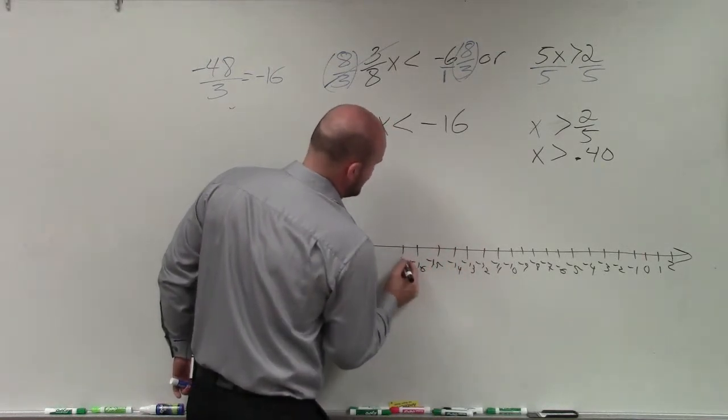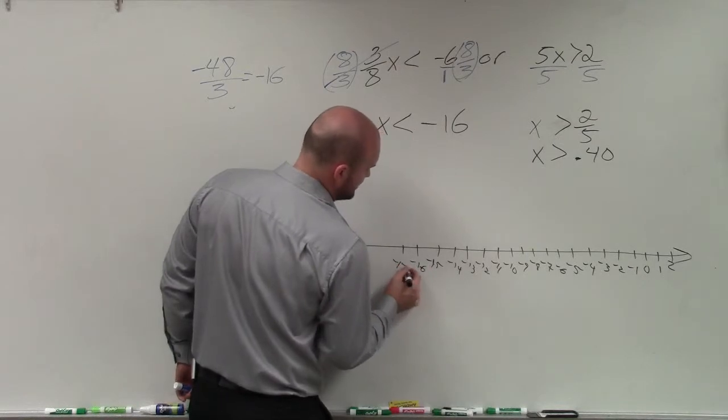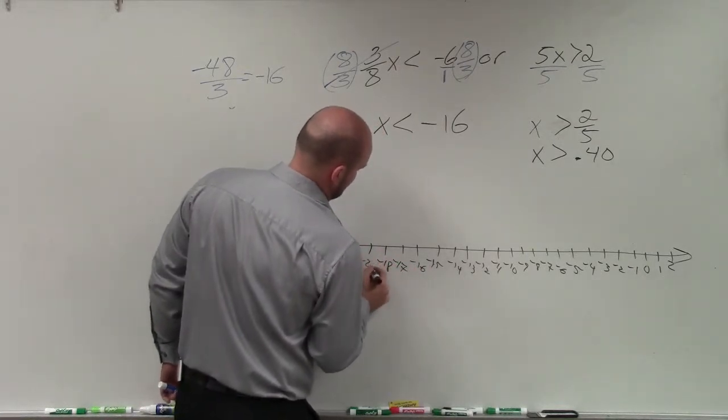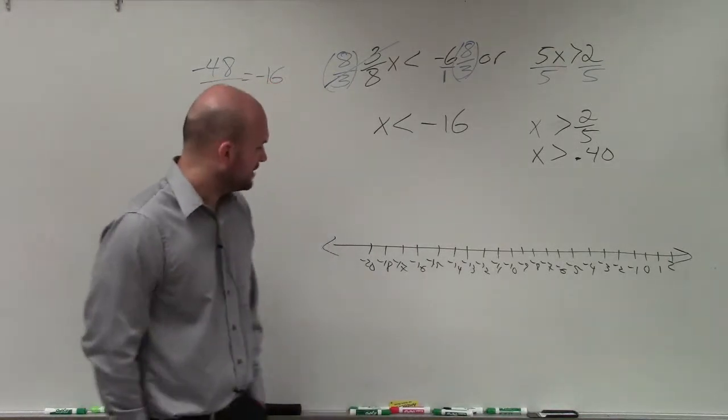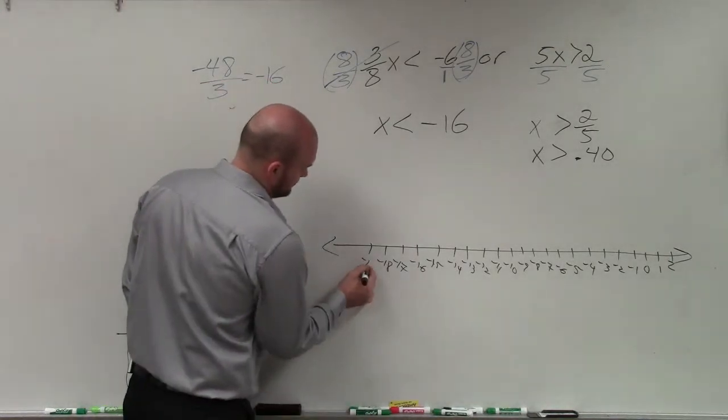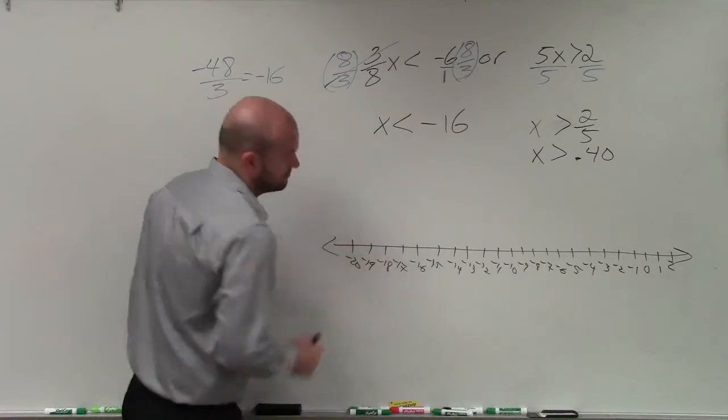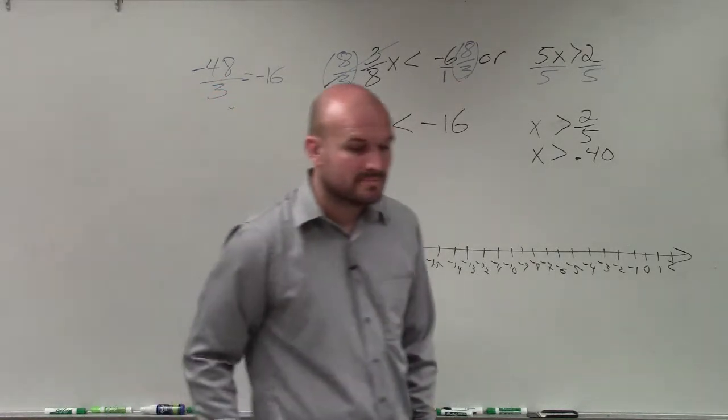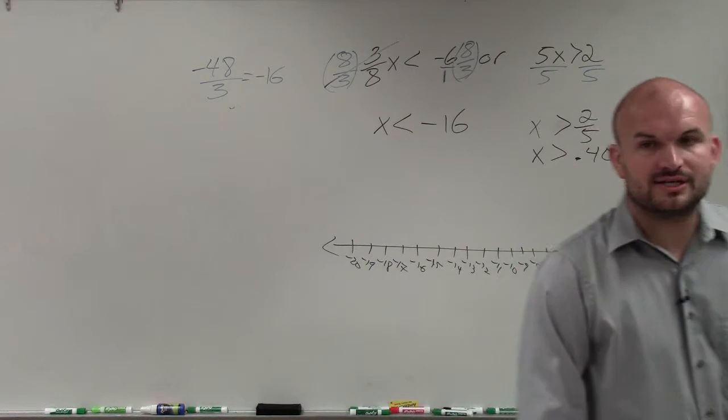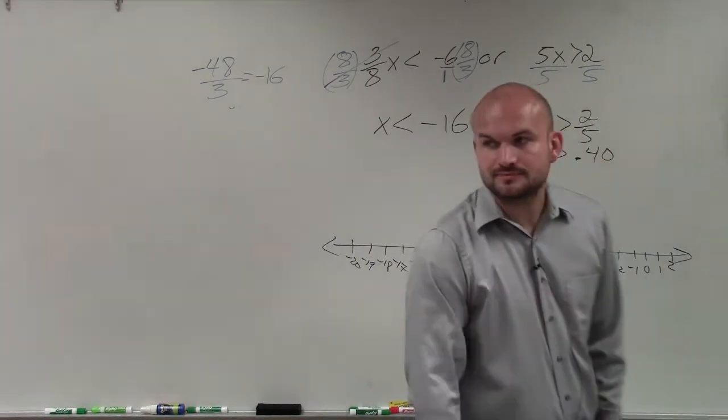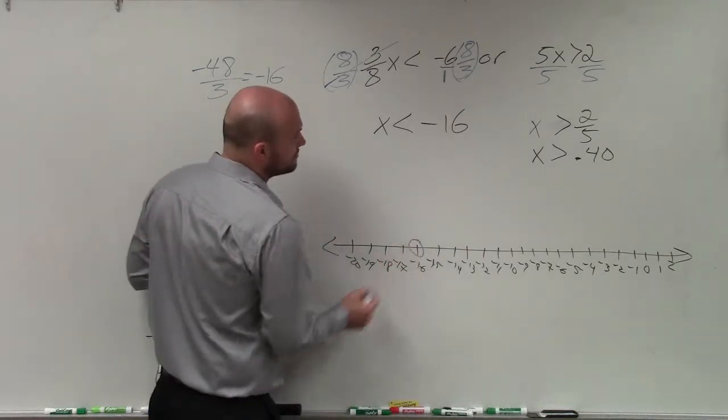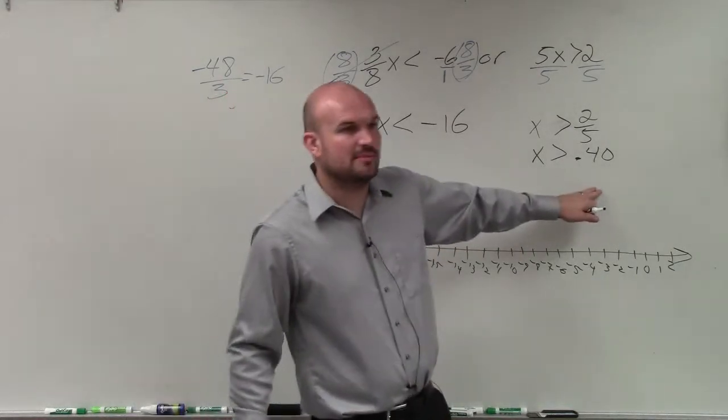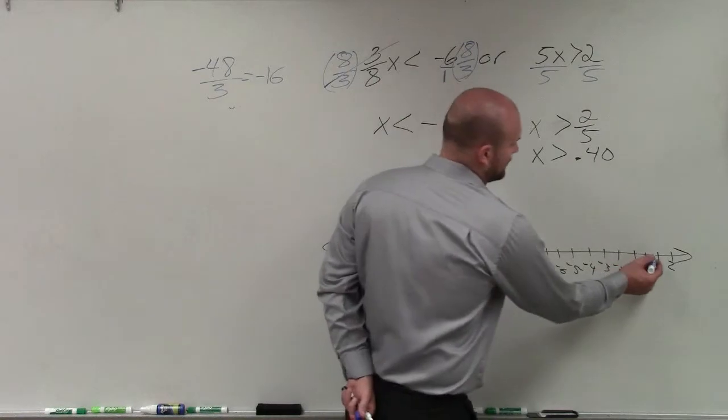You can go by 2s, you can go by 3s, you can go by 4s. That's perfectly fine. So now we need to go ahead and plot both of these points. And when we plot both of these points, negative 16 is obviously going to be here. And x is greater than 0.40 is going to be over here.